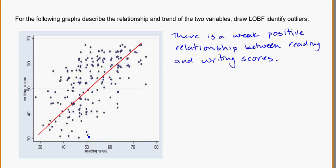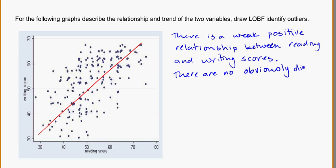In this case, I'm looking for outliers as well. There are some points that are kind of off on their own a little bit, but I wouldn't call that an outlier because they're still sort of following the trend. Other points are equally far from the line, so they're not uniquely isolated. There are no obviously distinct outliers.